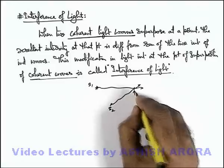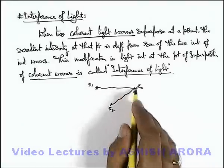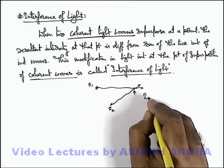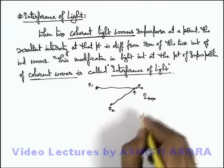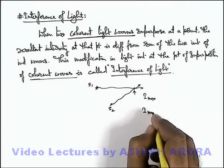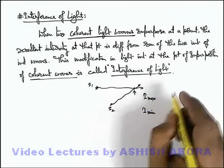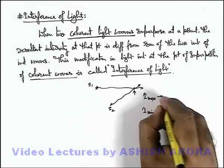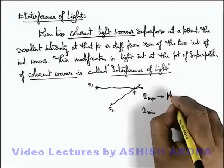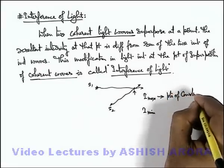So if this is a point of superposition, there are some points where the resulting intensity becomes maximum and there are some points where the resulting intensity becomes minimum. So the points where intensity is maximum are called points of constructive interference.